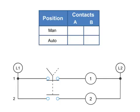Each contact on the line diagram is marked A or B. The positions of the selector switch are marked MAN for manual or AUTO for automatic. The truth table can be used to easily interpret what contacts are closed for a particular position. An X is placed in the table if a contact is closed in any position. An O is used to depict that a contact is open.